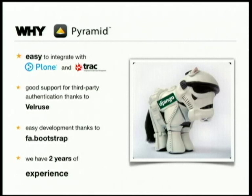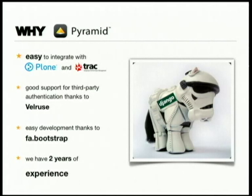Why Pyramid? Like the others, it's easy to integrate with the rest of the stack. It has very good support for third-party authentication — if you need to integrate with Google, Facebook, or Twitter, we just use Velruse, and it really rocks. I spent a lot of days trying to do OAuth token handling myself; it was painful. Then using Velruse — just configure it — and it completely changed how we integrate applications. We're also using FA Bootstrap, which stands for Form Alchemy Bootstrap — a nice tool to quickly build your admin interface. You define models in SQLAlchemy and it builds your forms with validations automatically, speeding up development.